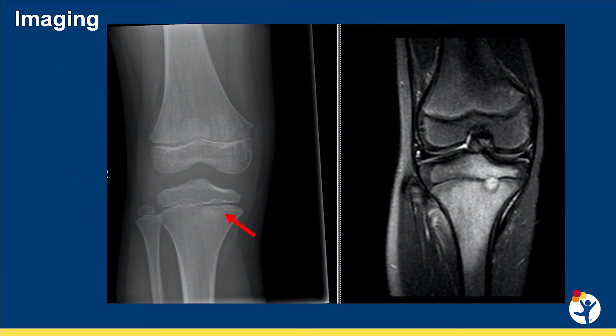When we look at patients' radiographs who have CRMO, sometimes you can't see any findings on the radiographs. When we do, most often you'll see some radiolucent lesions that are right next to their physis. The red arrow on the radiograph is pointing to a periphyseal lucency.